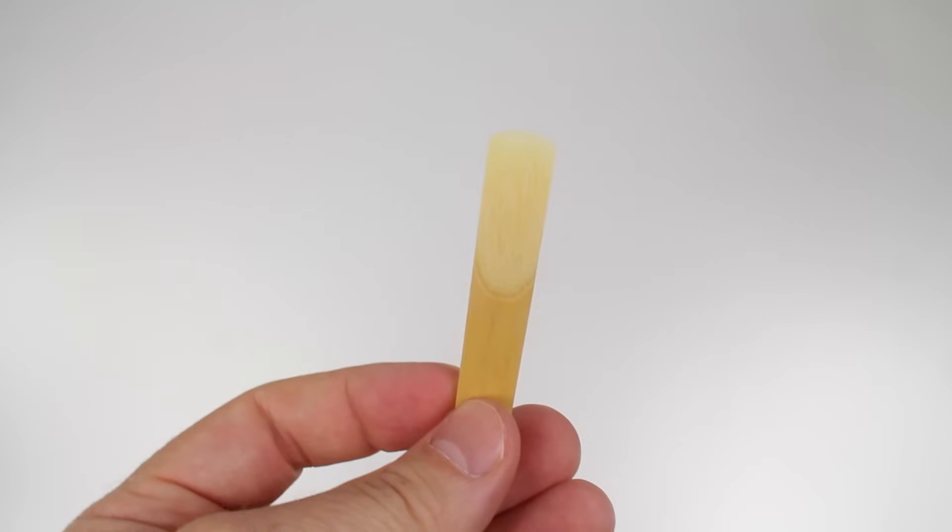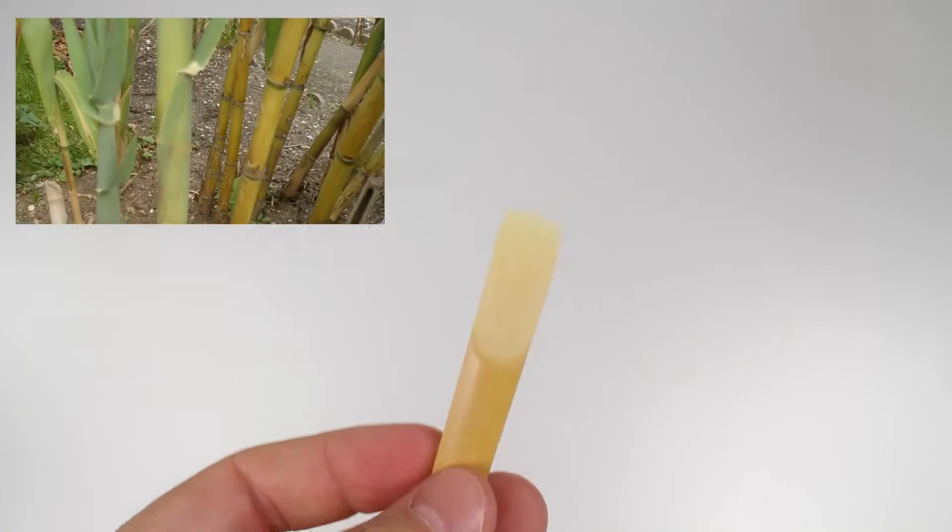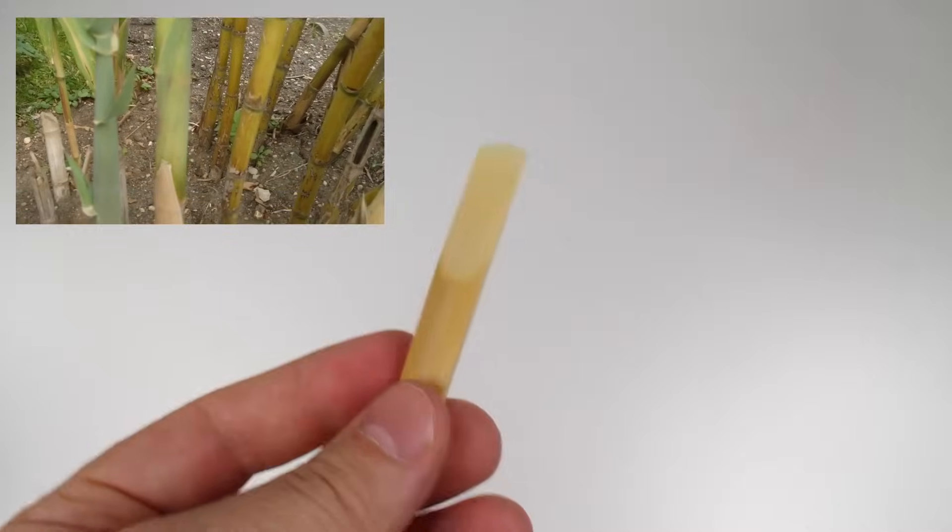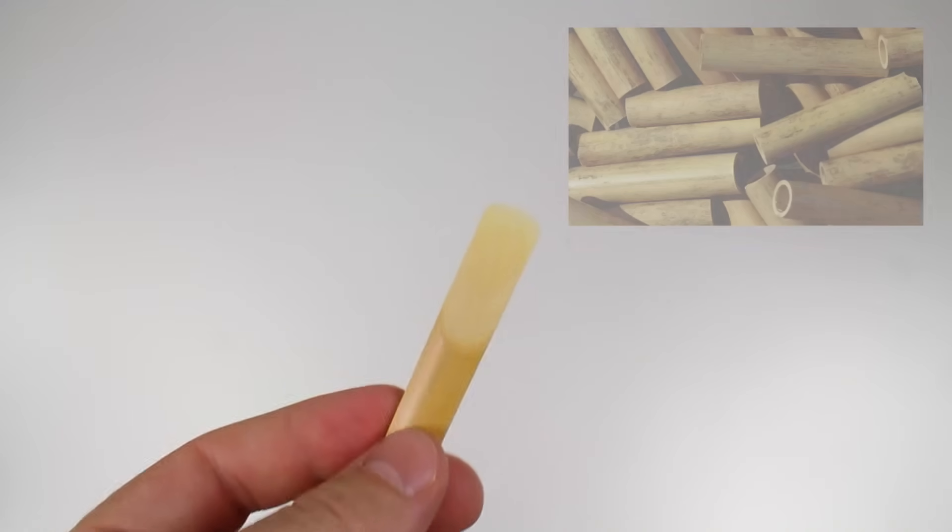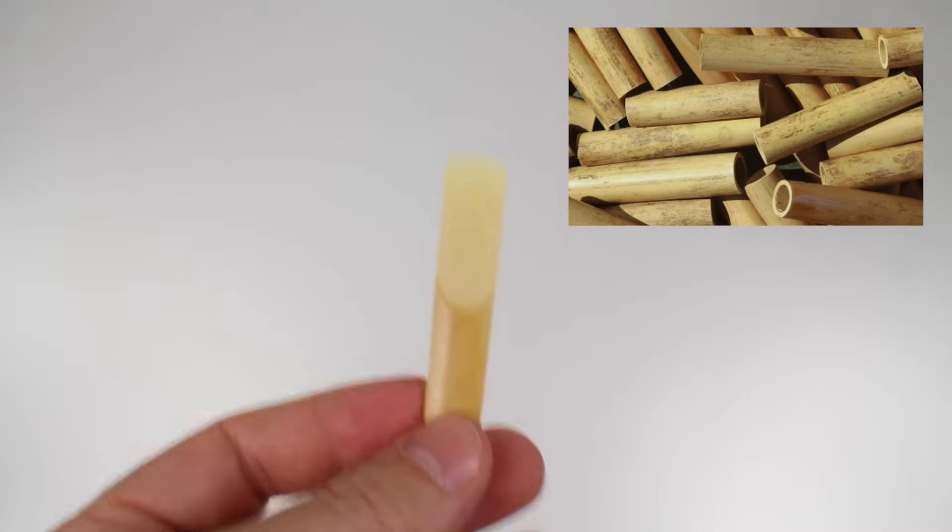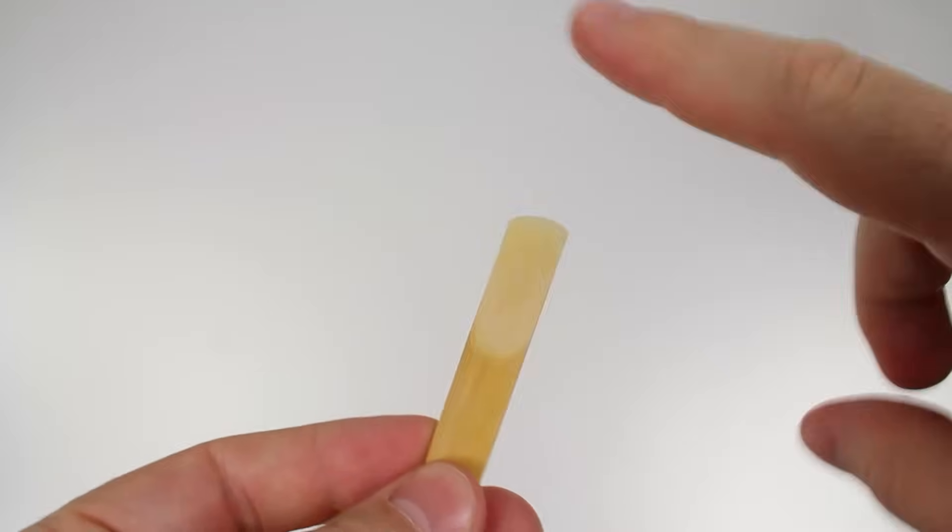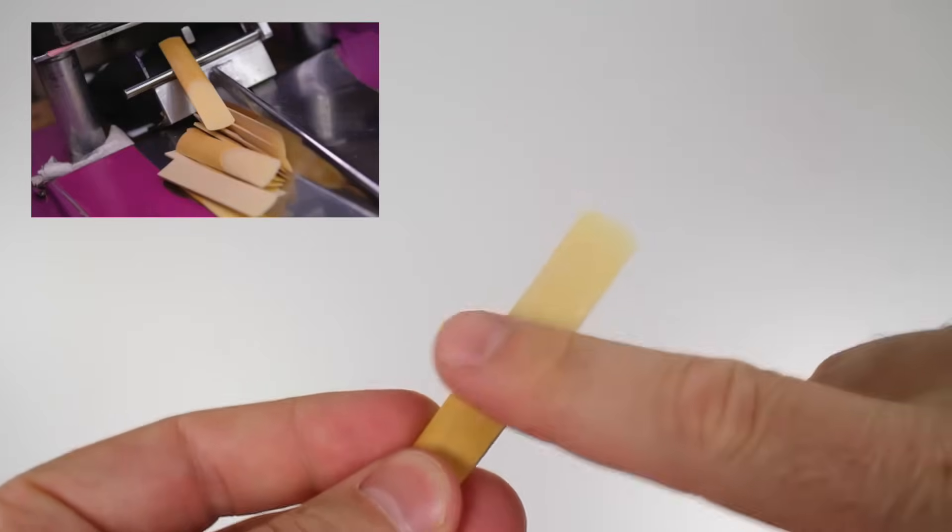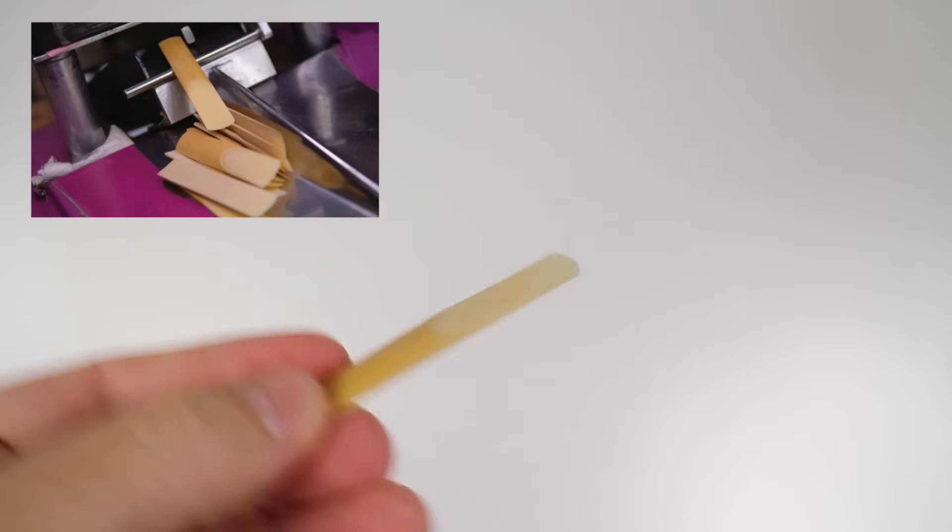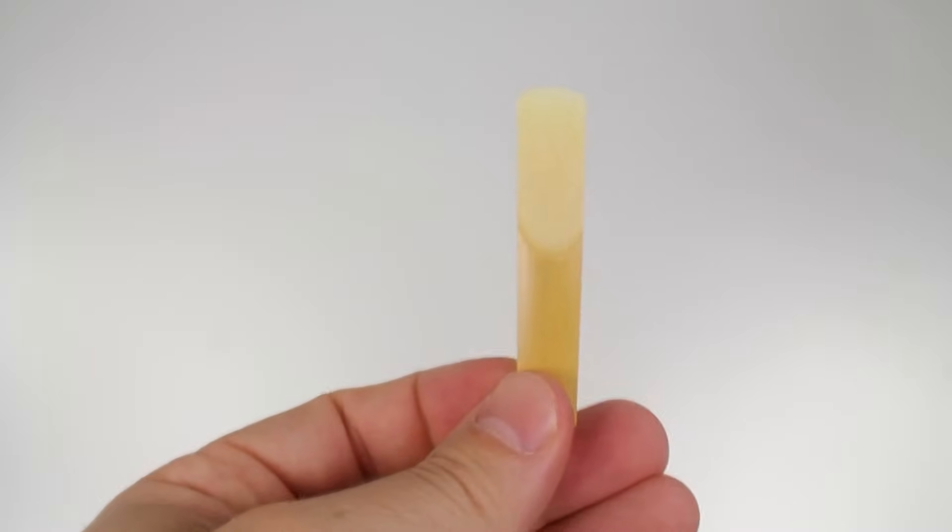Reeds are made from a tall wood-like plant called cane. It's kind of like bamboo. And at a factory, they take the cane, they cut it down into small pieces, and then they shave off part of the bark very thin, and it turns it into a reed that we can use for an instrument.